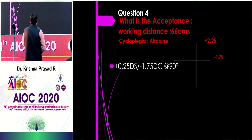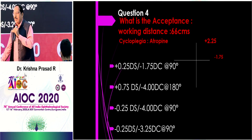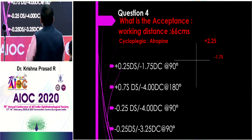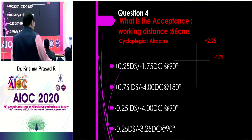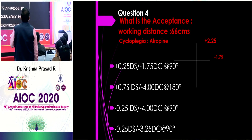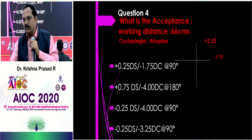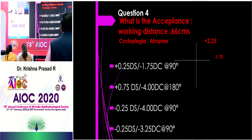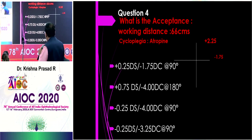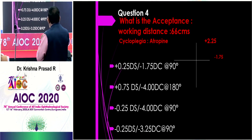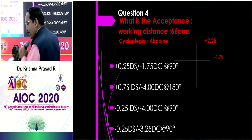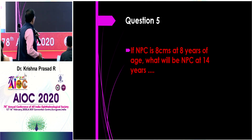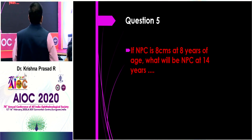Question 4 to Rashmin's team: retinoscopy done at 66 centimeters with atropine cycloplegia. Working distance at 66 cm is 1.5 diopters, and atropine adds 1 diopter — total subtract is 2.5 diopters. Subtracting 2.5 from 2.25 gives minus 0.25 sphere. From 2.25 to 1.75 the difference is minus 0.5, making it minus 0.5 cylinder. The answer is C: minus 0.25 sphere minus 0.5 cylinder.